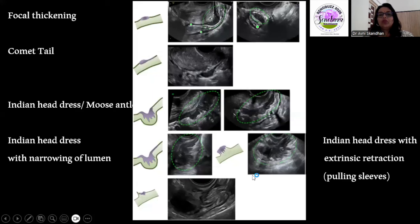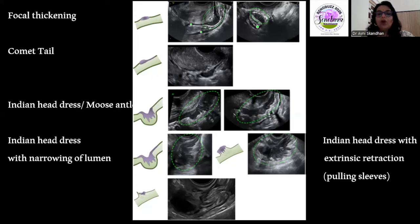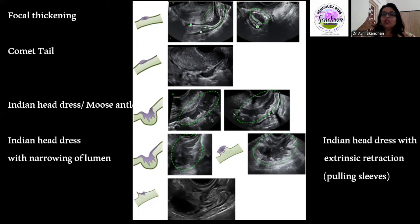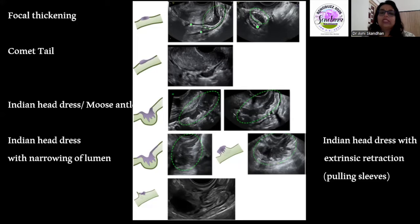How do we describe bowel wall thickening? There are different terminologies. You can see it as a focal thickening. You can also see it as a focal thickening with an extended thickening giving a comet tail-like appearance. Or there can be thickening with fibrosis causing speculated ends, giving an Indian headdress or moose antlers appearance. When this grows into the cavity it causes luminal narrowing. When the deposit is outside and causing fibrosis, it pulls structures — this is called the pulling sleeve sign.